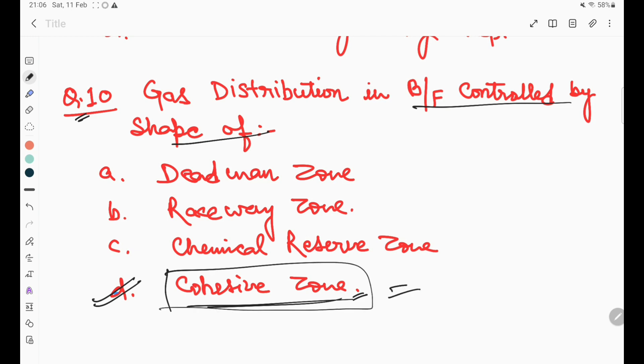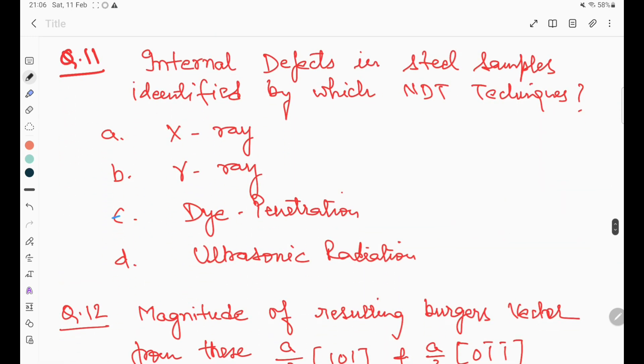Question number eleven: internal defects in steel samples are identified by which NDT techniques. More than one option is correct: X-rays, gamma rays, and ultrasonic. These three can detect the internal defects in steel samples. Dye penetration cannot.